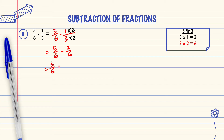3 over 6 is the answer. But 3 over 6 we can write in simplest form. In the 3 times table: 3 times 1 equals 3, 3 times 2 equals 6.